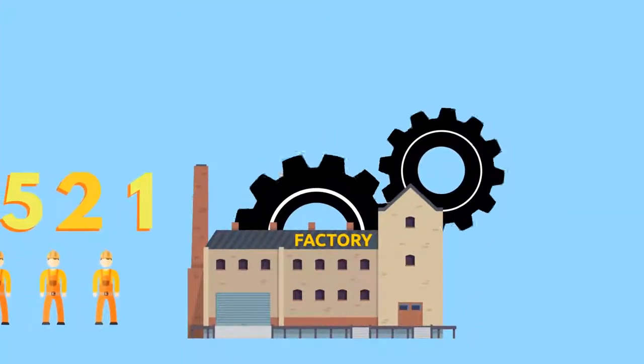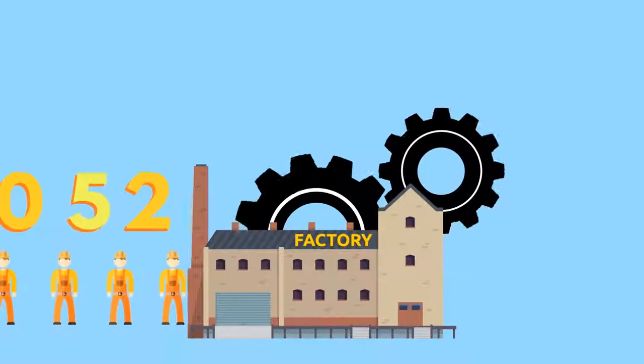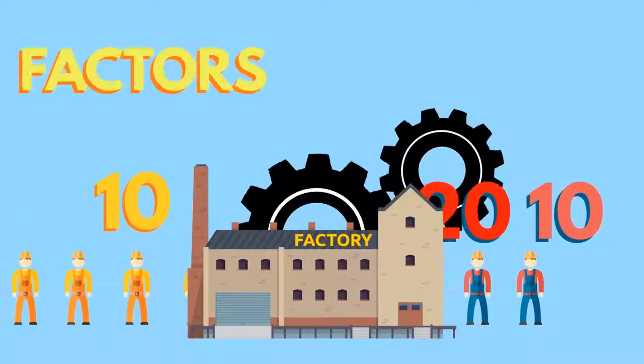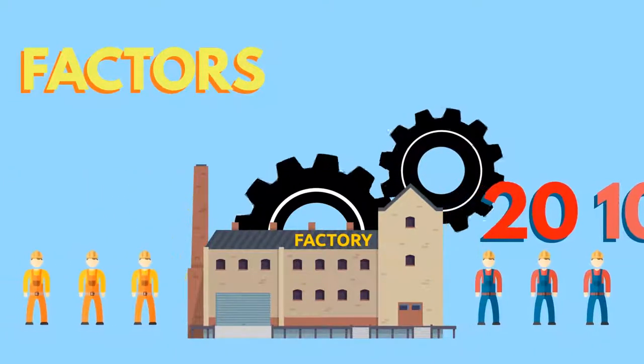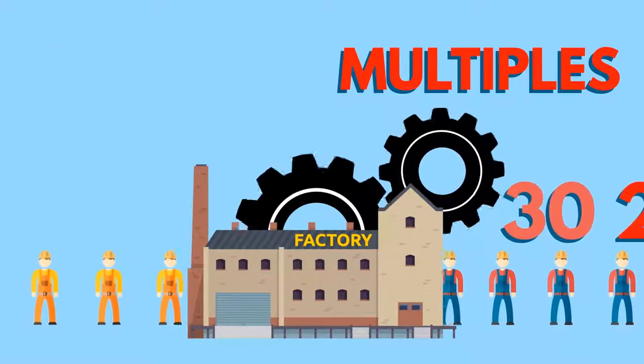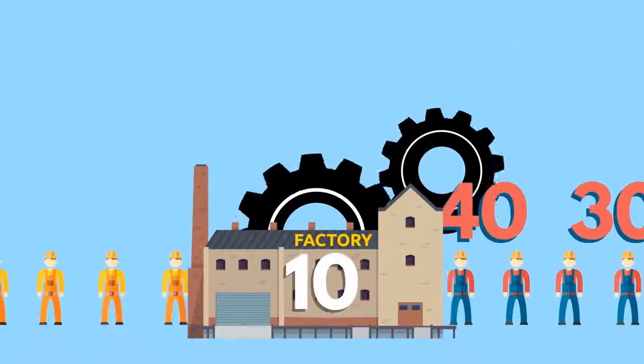A good way of remembering the difference between the two is to think of people in a factory. The people going in are factors. The people coming out are multiples. Here's one for the number 10.